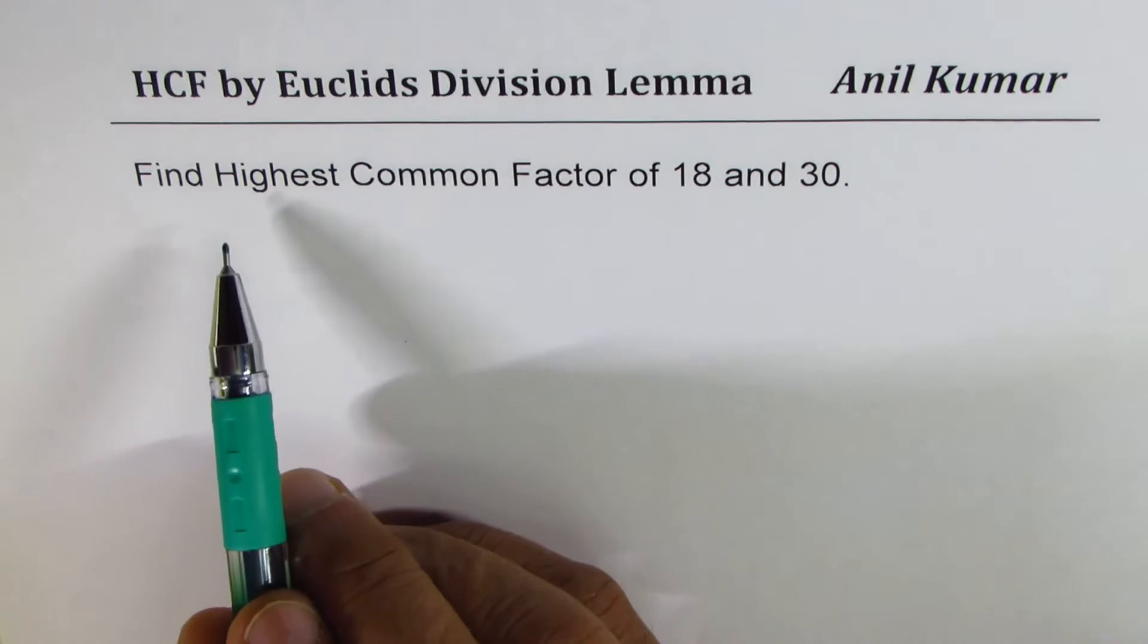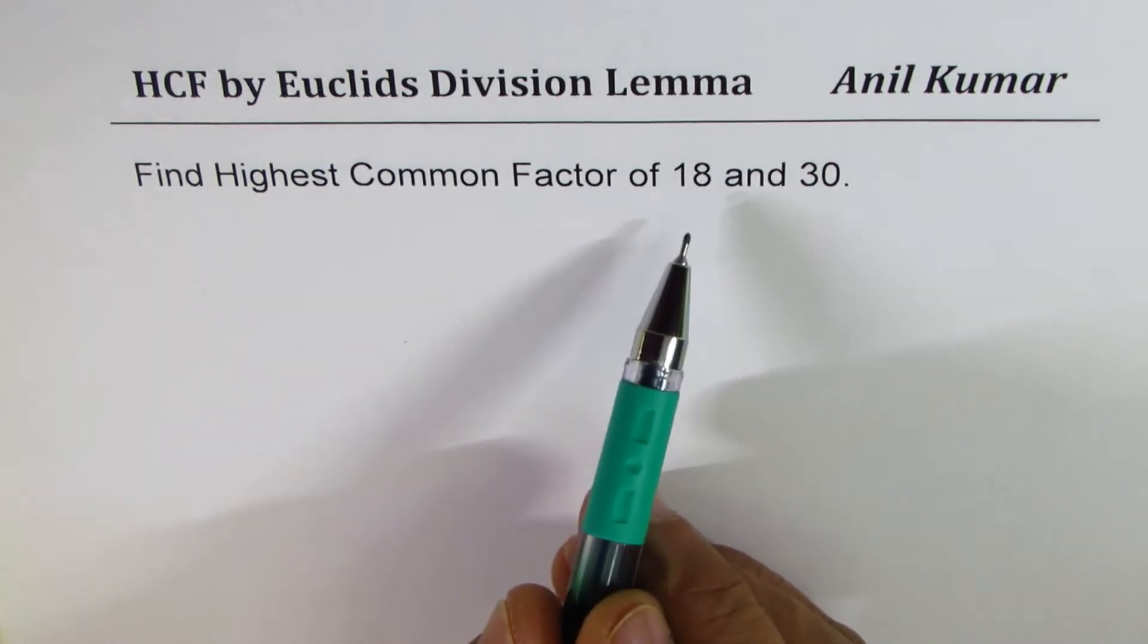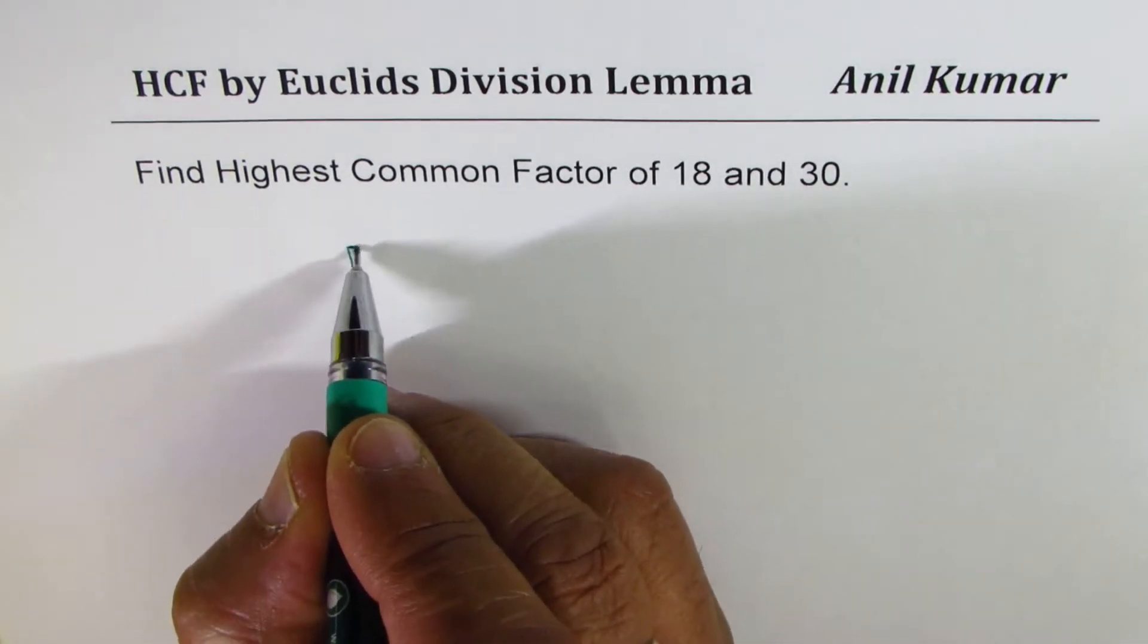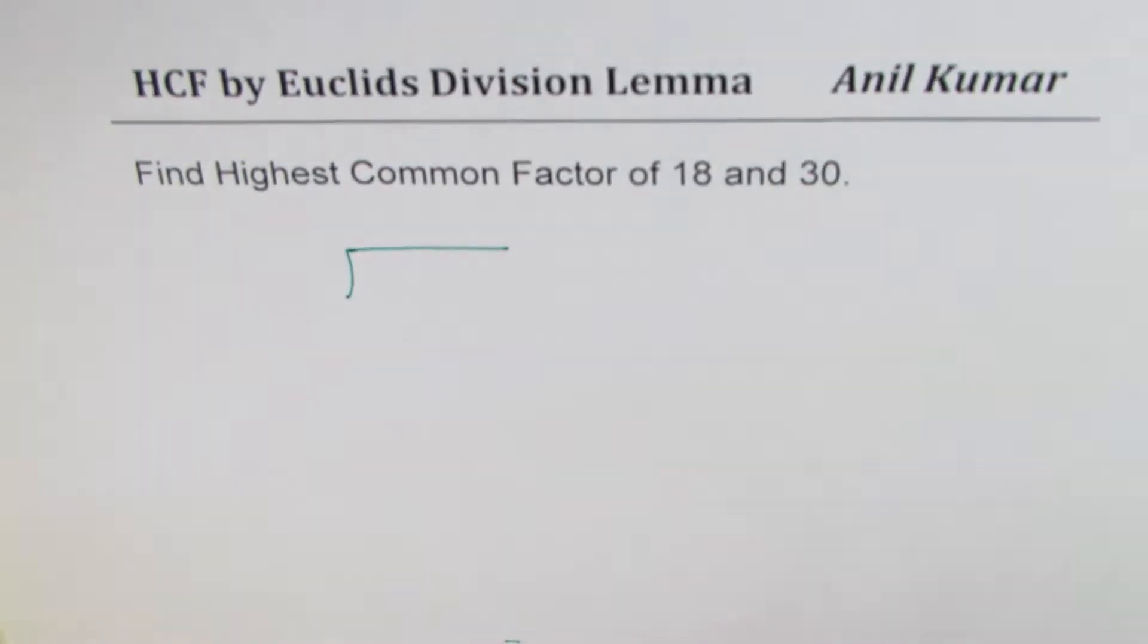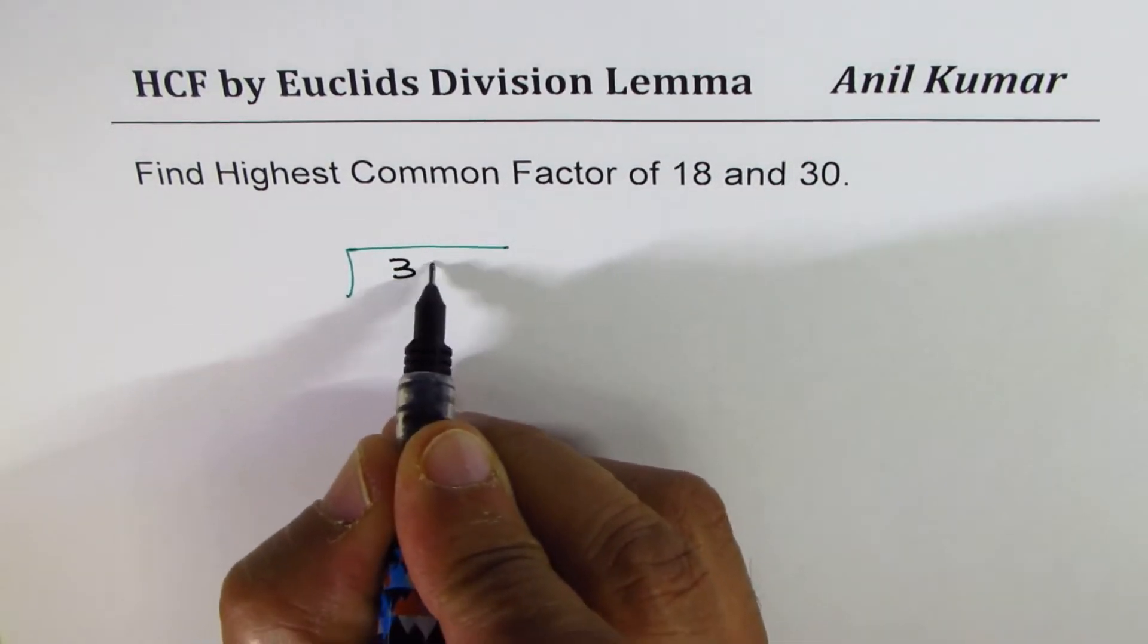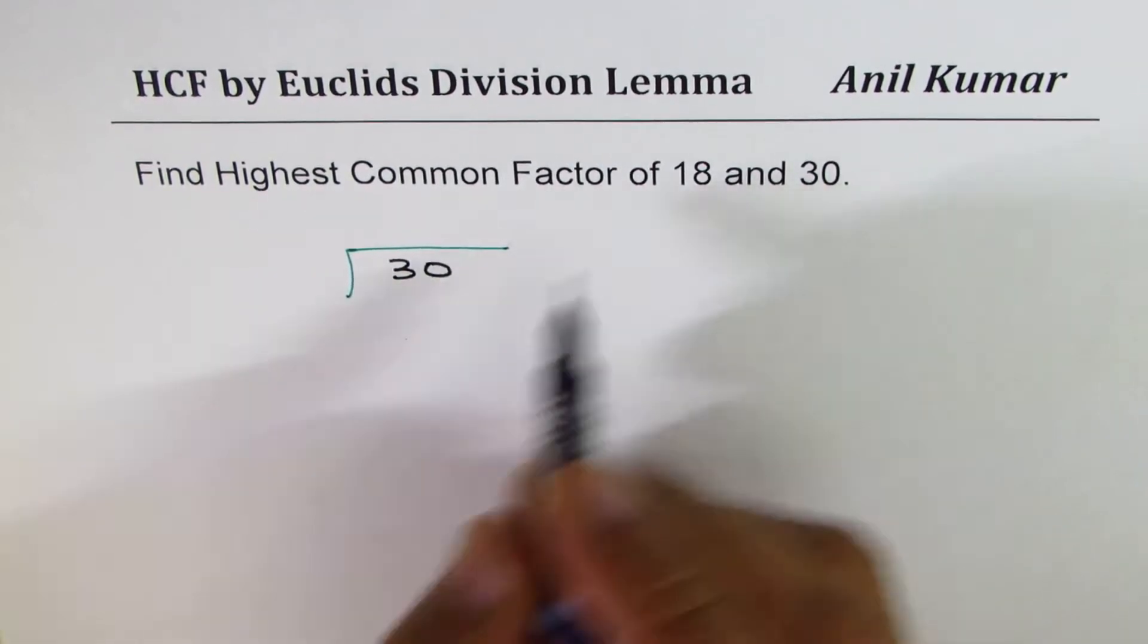The question here is find highest common factor of 18 and 30. The process is that you have to divide the bigger number by the smaller number. In our case, 30 is the bigger number, so that comes dividend. Divisor is 18.